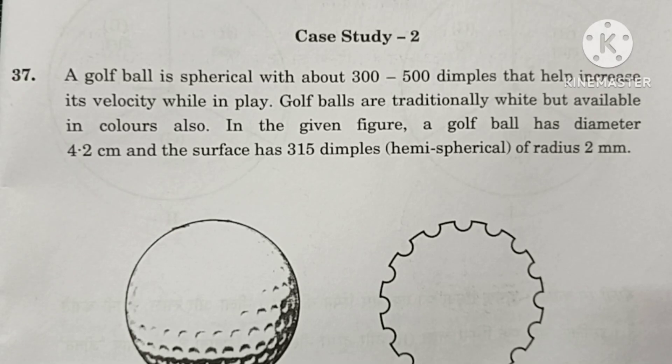Hi viewers. A case study question for CBSE's 10th standard students. A golf ball is spherical with 300 to 500 dimples that helps increase its velocity while in play.